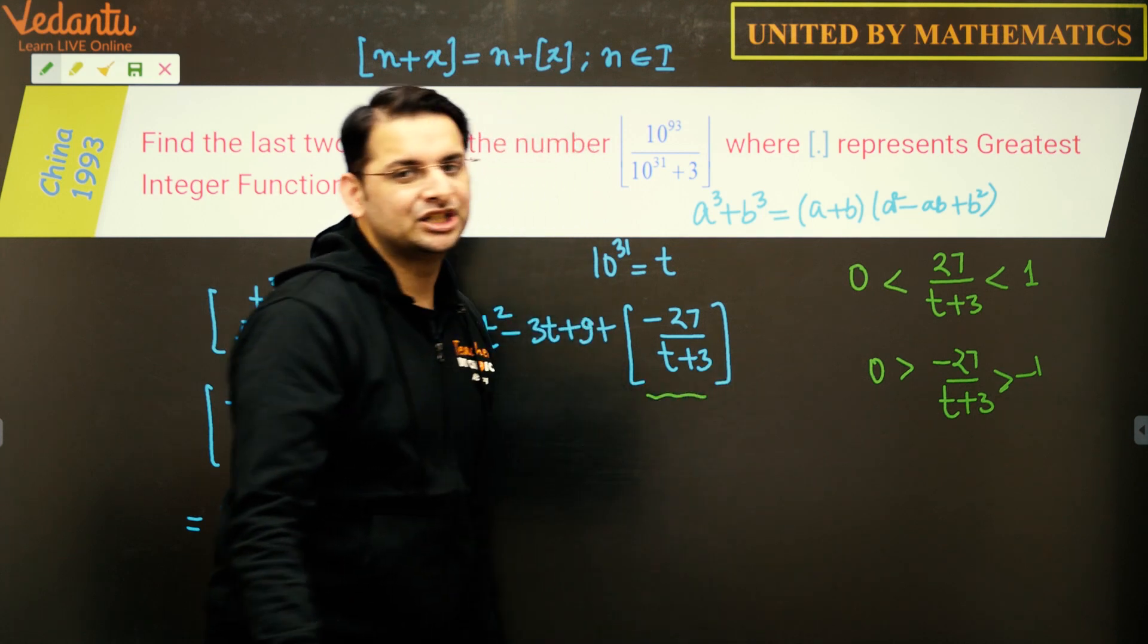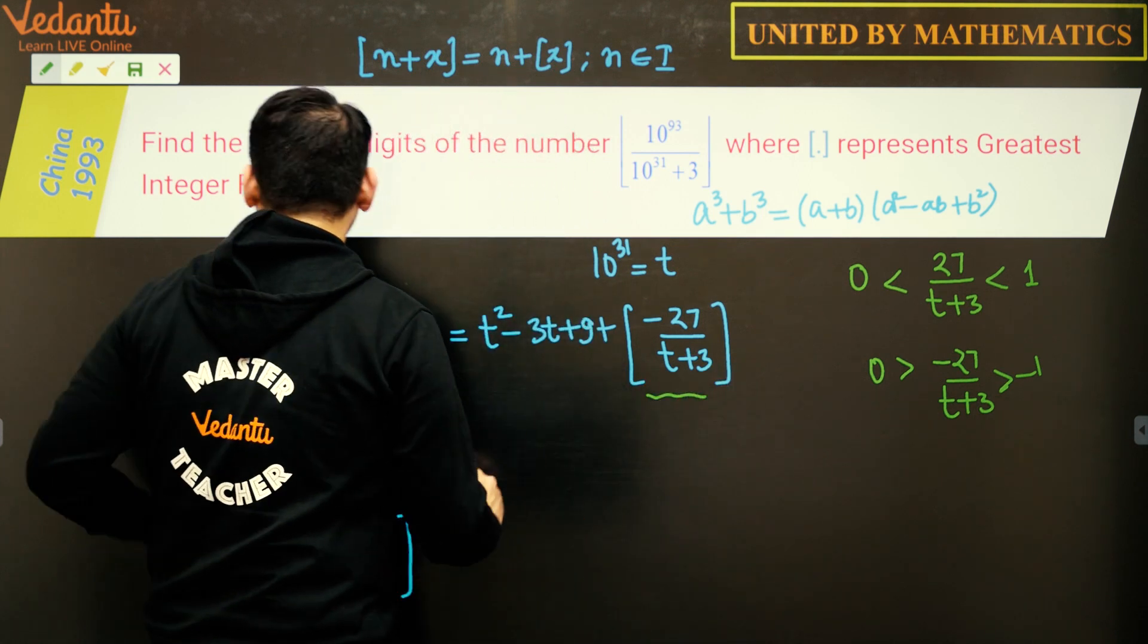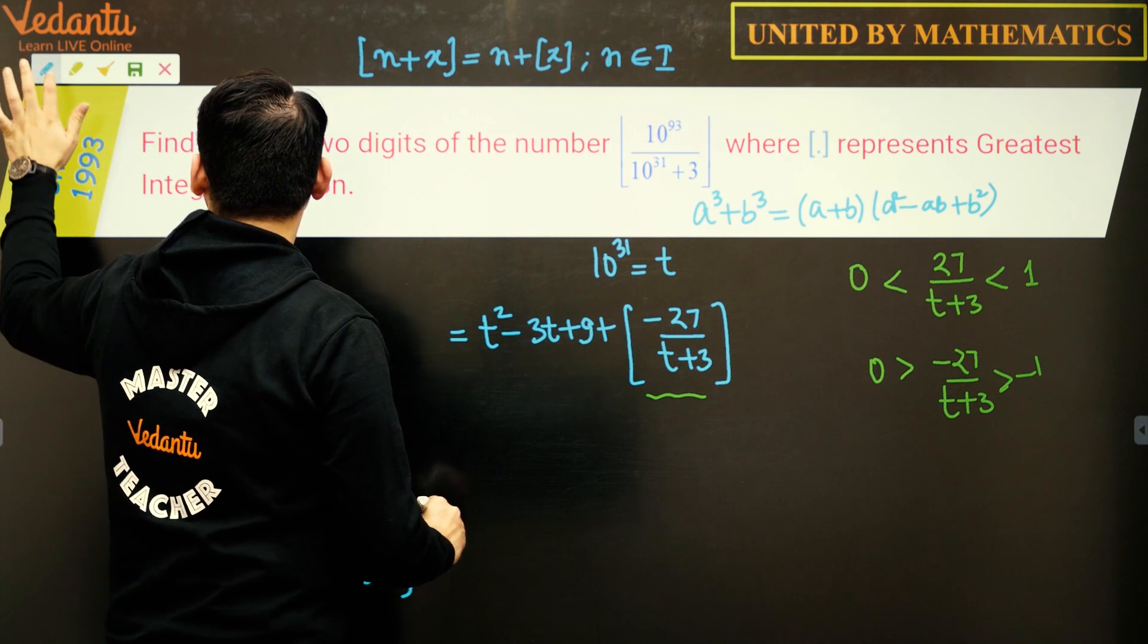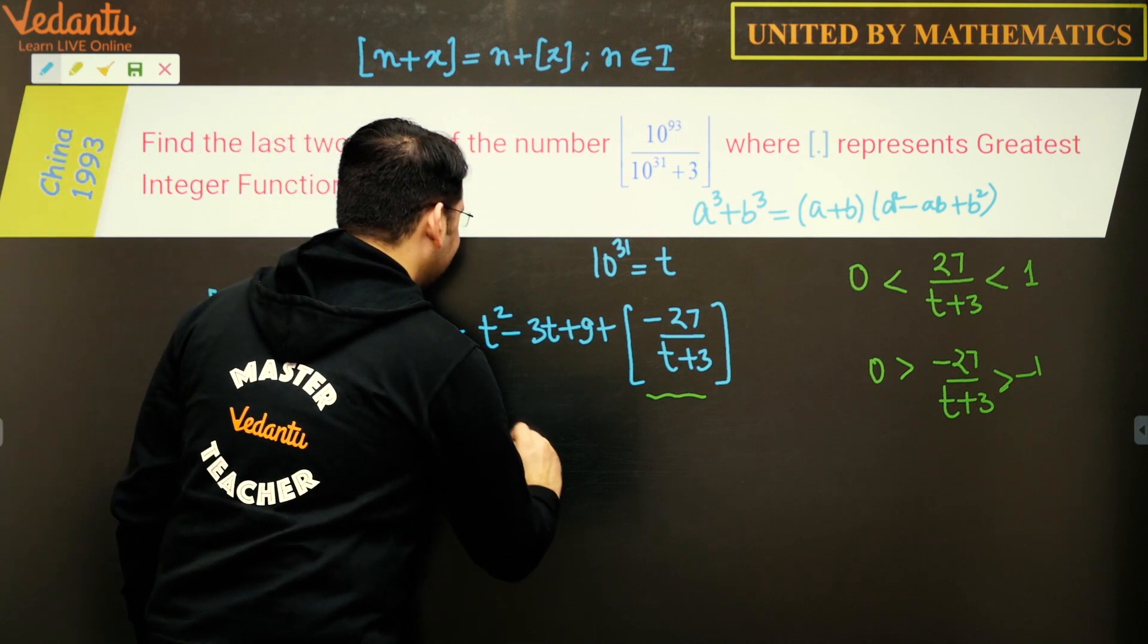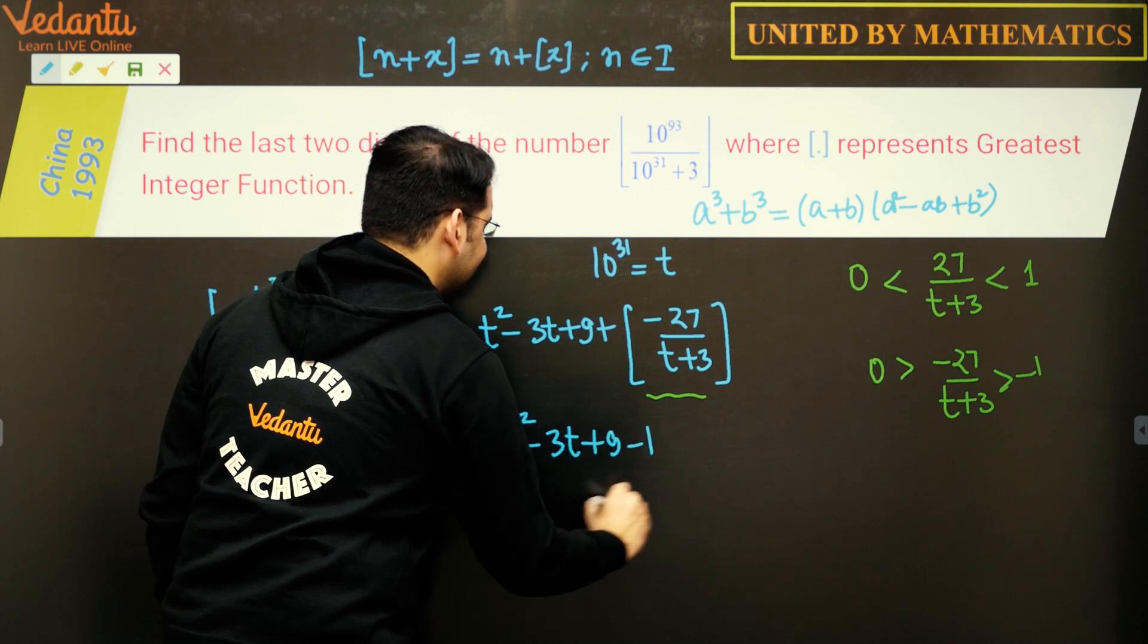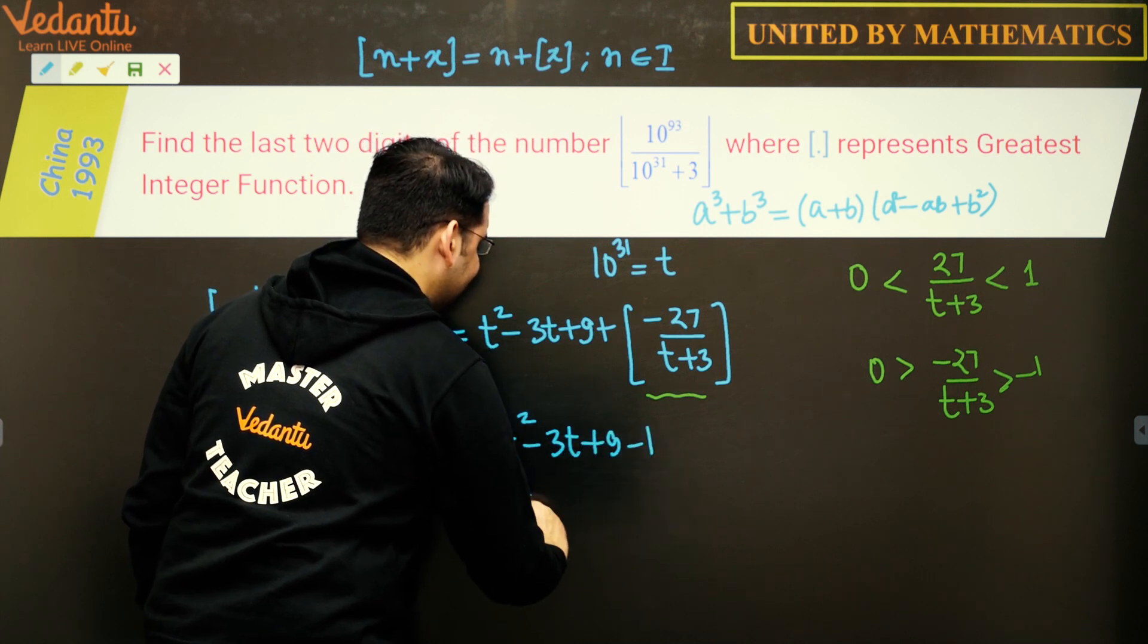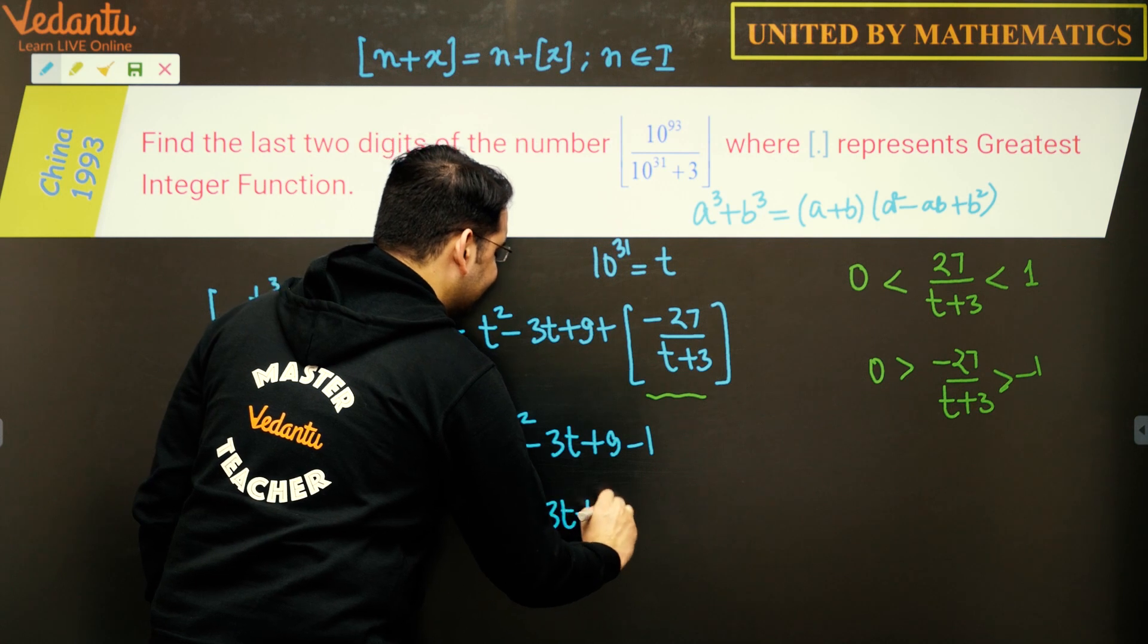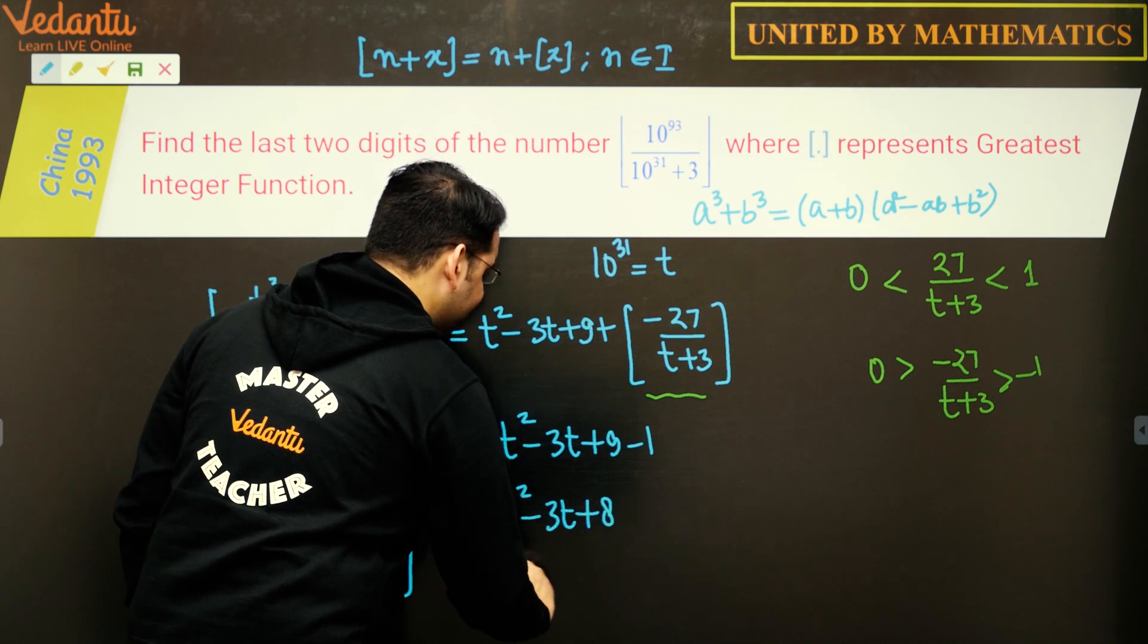We have this equal to t² minus 3t plus 9 minus 1. This simplifies to t² minus 3t plus 8.